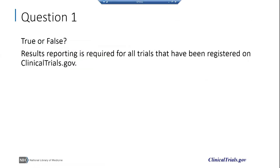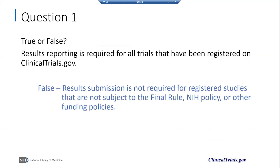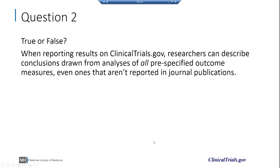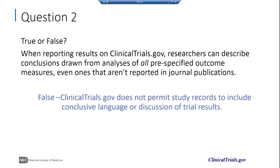Now a couple of review questions. True or false: Results reporting is required for all trials that have been registered on clinicaltrials.gov. This is false — results submission is not required for registered studies that are not subject to the final rule, NIH policy, or other funding policies. True or false: When reporting results on clinicaltrials.gov, researchers can describe conclusions drawn from analyses of all pre-specified outcome measures, even ones not reported in journal publications. This is also false — clinicaltrials.gov does not permit study records to include conclusive language or discussion of trial results.